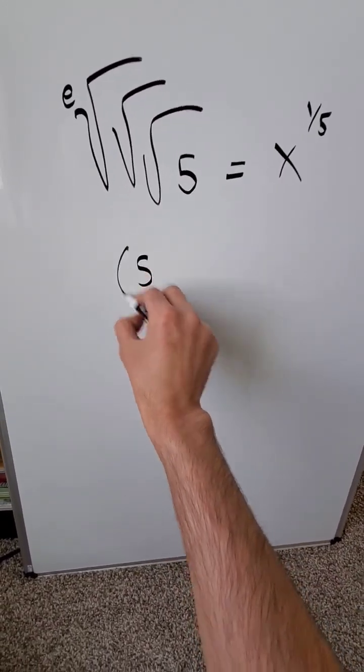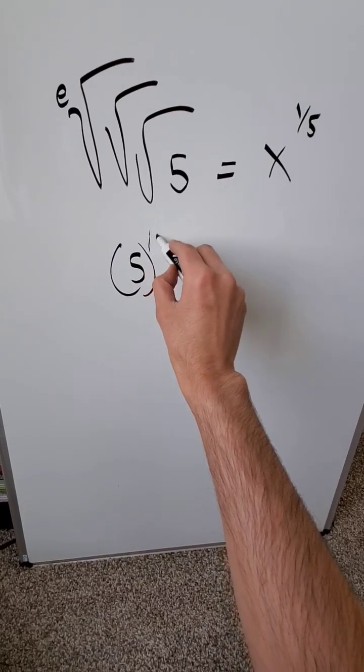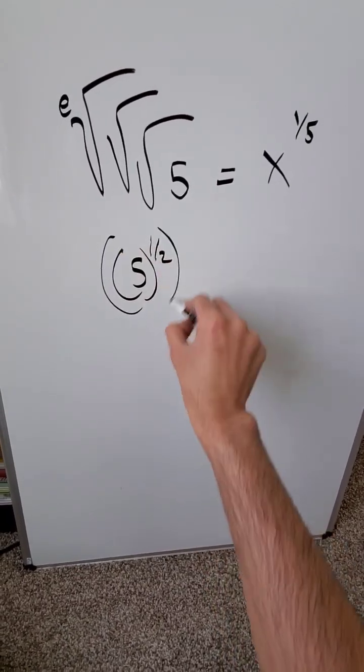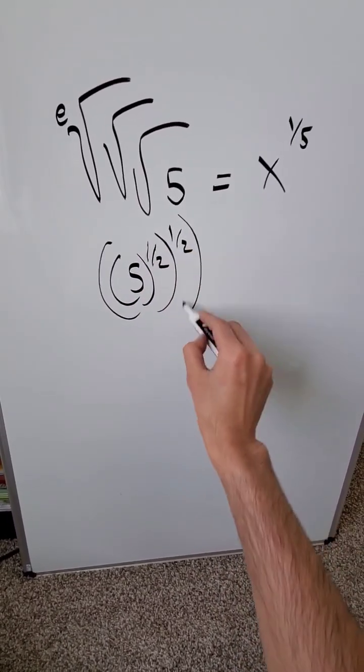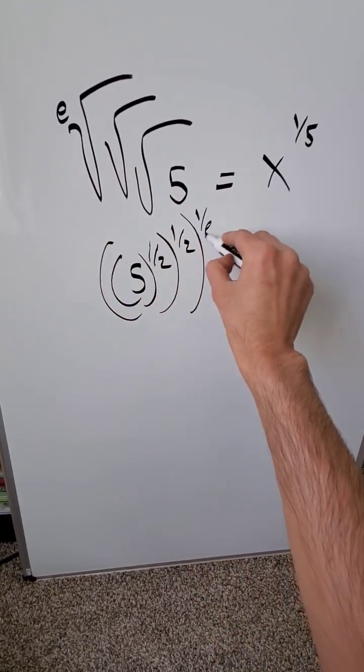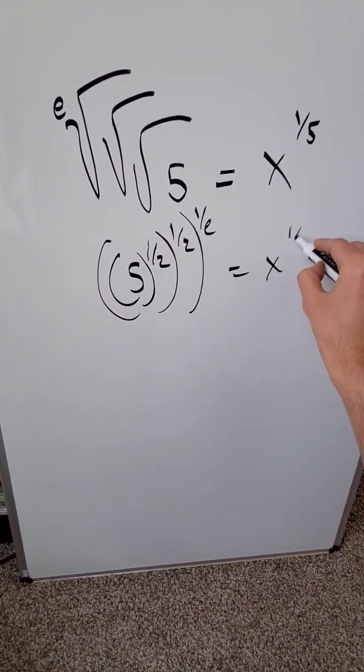Look here at this 5 and start opening it up in terms of exponents. I have to the power of 1 over 2. It's embedded in a root which is embedded in another root which is finally embedded in an e root 1 over e is equal to x to the power of 1 over 5.